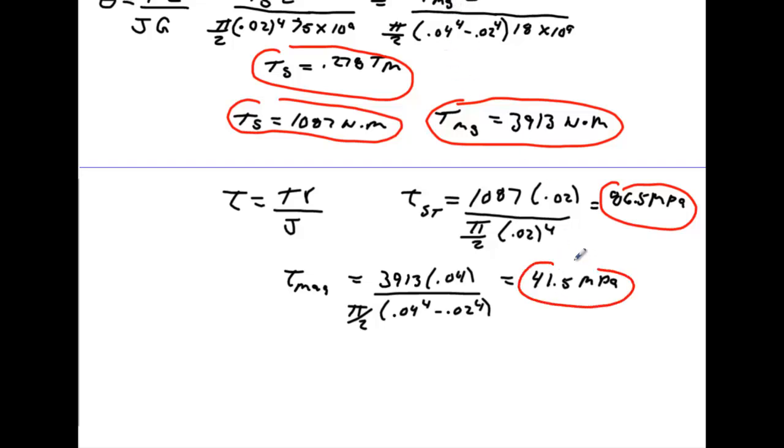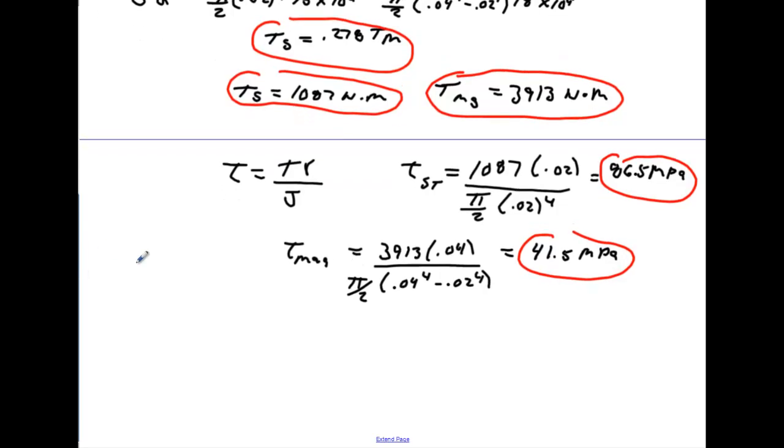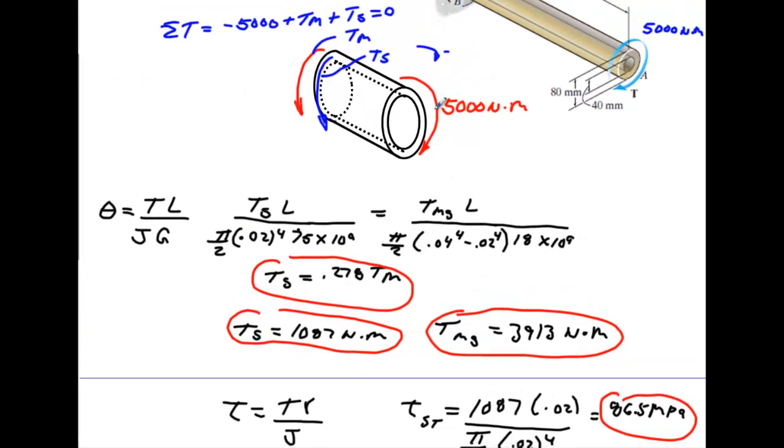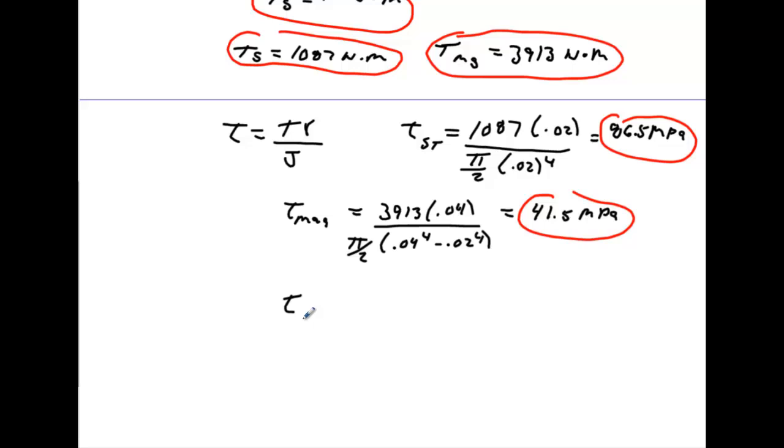Okay. So those are the maximum shear stress. Now, I believe, if I go back up, the problem wanted you to draw the sketch of shear stress distribution. All right. So if you're going to do that, you're going to have to find out what the shear stress is going to be at the inner radius. You need to find out what it's going to be right here for the magnesium. We've calculated what it's going to be on the outer, but not the inner. So we do that torque at the inner radius. We'll call it IR of the magnesium. It's going to be the same torque value 3913 times 0.02 and divided by all this pi over 2 times 0.04 to the fourth minus 0.02 to the fourth.